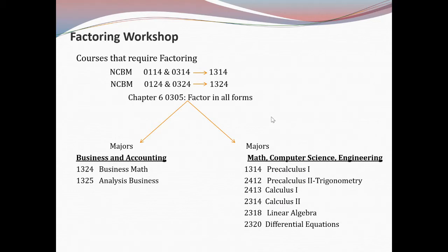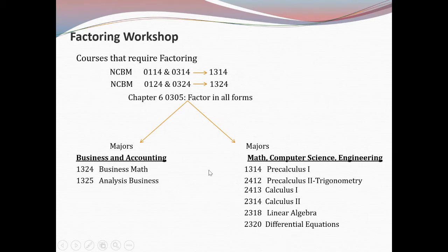I'd like to point out to students that when you're taking the NCBN — for example, 0114 or 0314 — you can go to 1314 after you pass those classes, or at times you take them together. Also, 0124 and 0324 — at times 0324 is taken together with 1324. Factoring is explained in Chapter 6 of 0305. All those courses prepare you for factoring in upper-level courses. If you're going to take business and accounting, 1324 which is business math, or 1325 which is business analysis, you have to know how to factor. On the right, we have all the courses that require factoring all the way to differential equations. The foundation of factoring is taught in the remedial courses, the NCBNs and 0305.